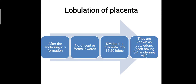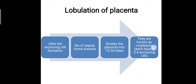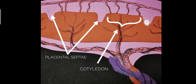Regarding the lobulation of the placenta: after anchoring villi formation, a number of septae form inward between these anchoring villi. These septae divide the placenta into 15 to 20 lobes, each termed a cotyledon. There are around 15 to 20 cotyledons separated by septae, and in each cotyledon around 3 to 4 anchoring villi are present. You can see the septae coming inward, separating the cotyledons.